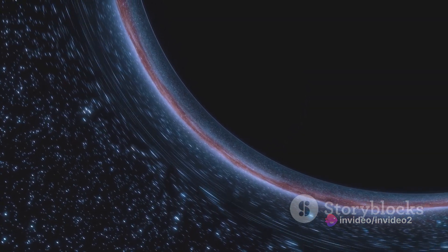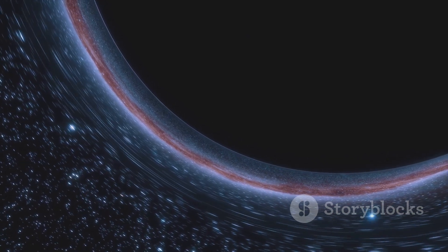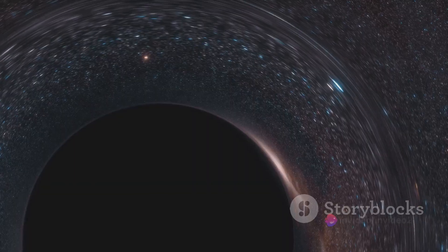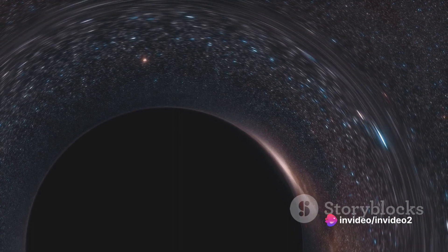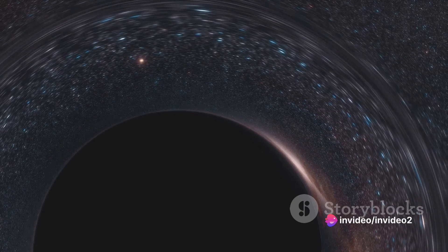According to Einstein, massive objects like the sun or a black hole distort the fabric of space and time around them, creating what we perceive as gravity. Now, black holes are unique because they are so massive and compact that they warp space-time to an extreme degree.